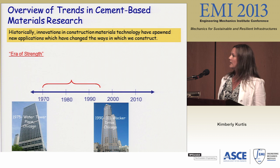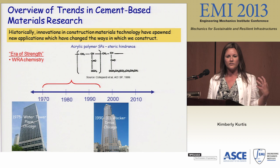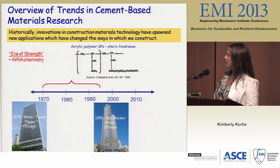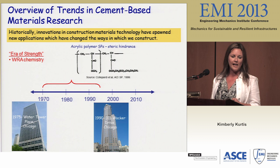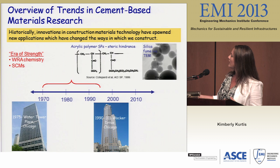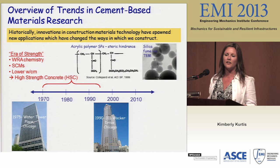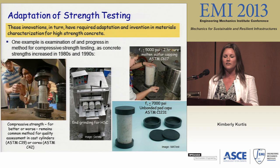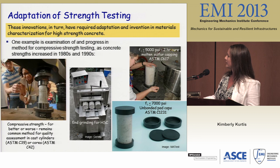One key innovation in the era of strength was water-reducing admixture chemistry. I'm showing here an acrylic polymer super-plasticizing admixture with a very long side group providing steric hindrance and stability, which allows us to use very fine particles like silica fume with good dispersion. We were able to start using more SCMs, different SCMs, reducing our water-cement ratio while still maintaining workability and pumpability. This is really what brought us into the era of high-strength concrete. With increasing strength came new challenges in characterization — something as common as compressive strength testing needed to evolve.